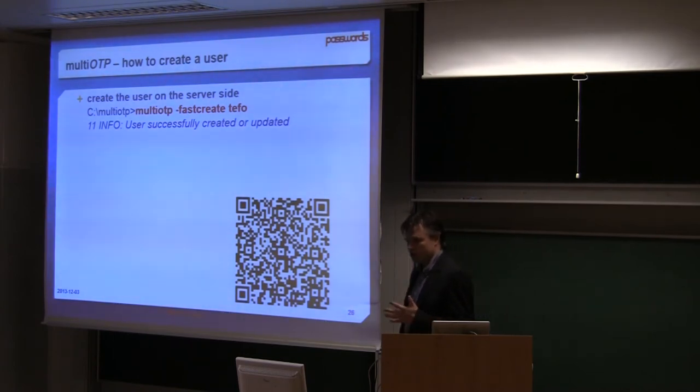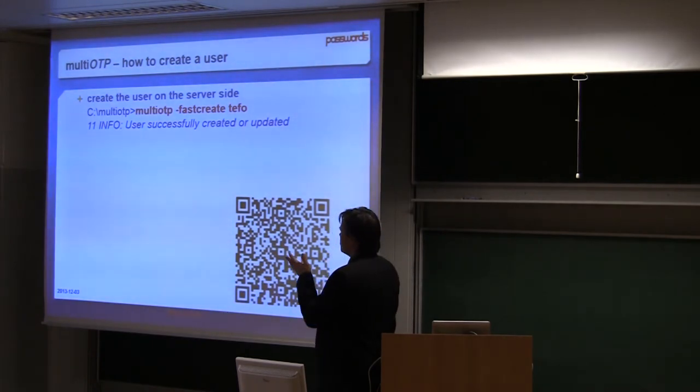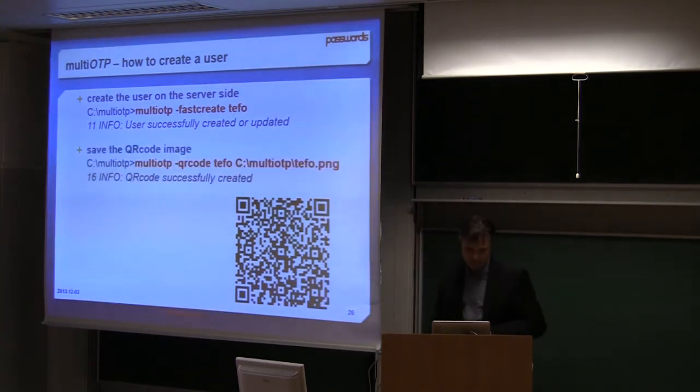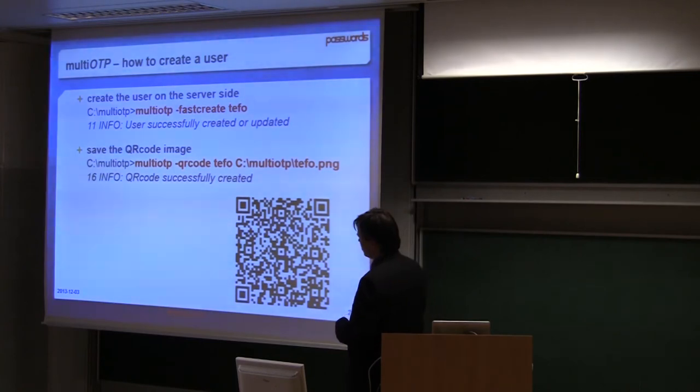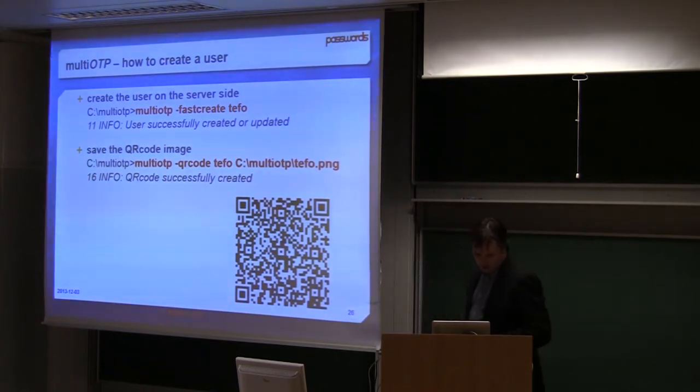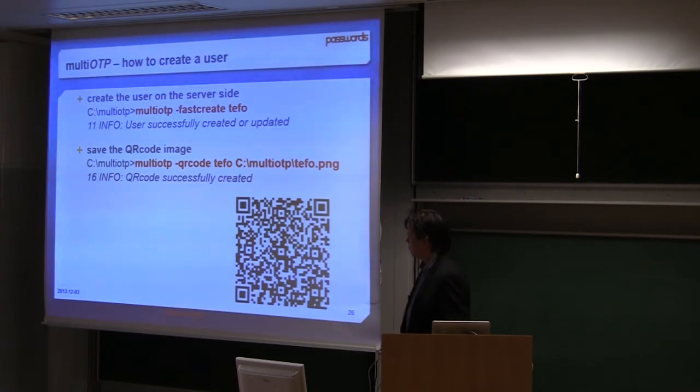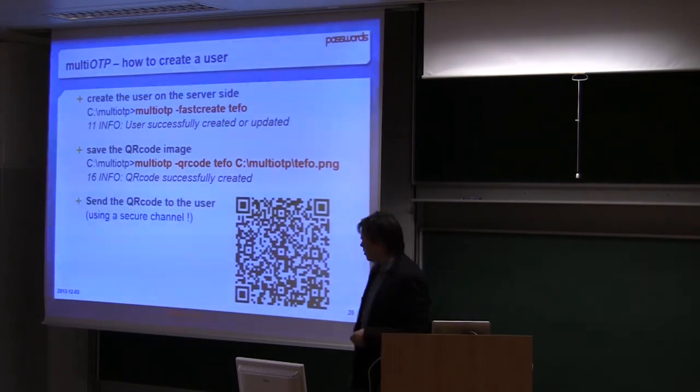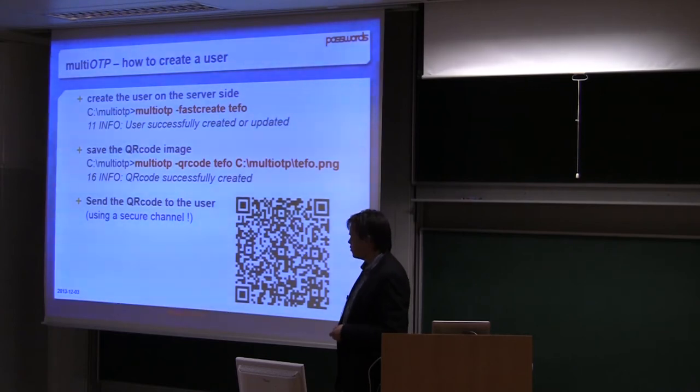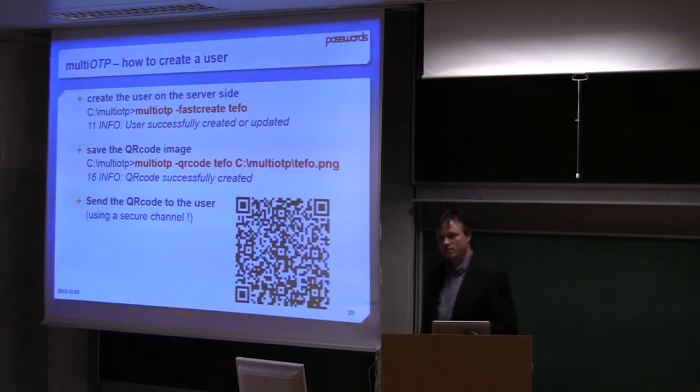To create a user on the server side, it's very easy. In the command line you just say multi-OTP fast create, put the name of the user and the user is successfully created or updated. After you can save the QR code of this user, of this token. You type multi-OTP minus QR code, the name of your user and the file where you want to put the QR code. The QR code is created and that's it. It's even simpler with the Raspberry Pi edition because I made a little web interface so it's easier to do that. At the end you have to send the QR code to the user. Of course you need to use a secure channel. If you send that per email, it's not so nice.